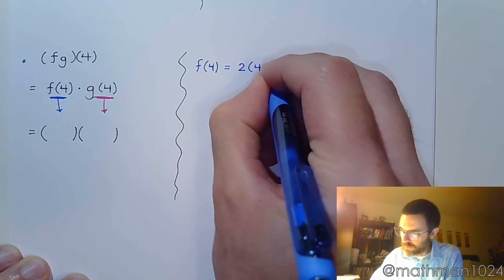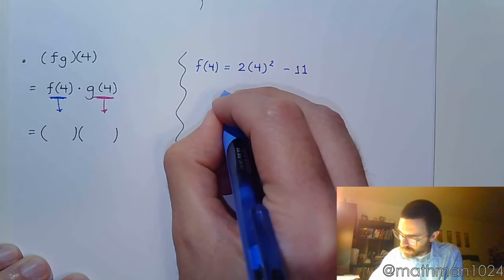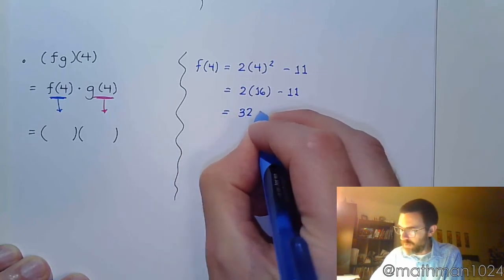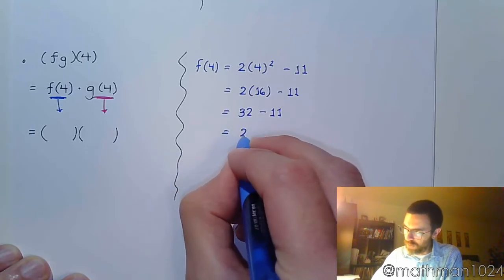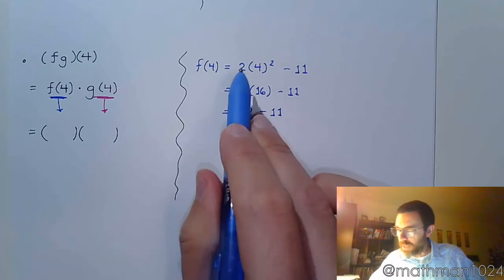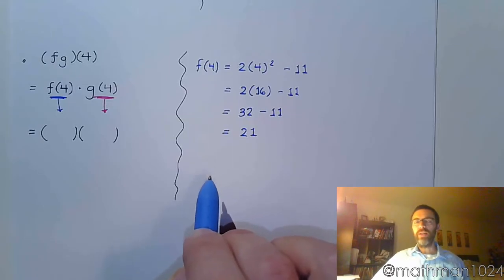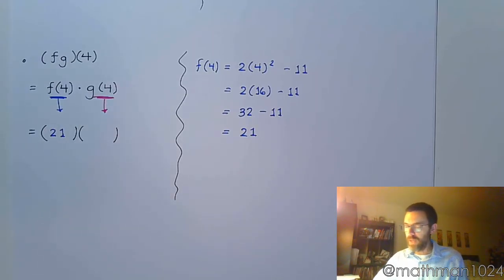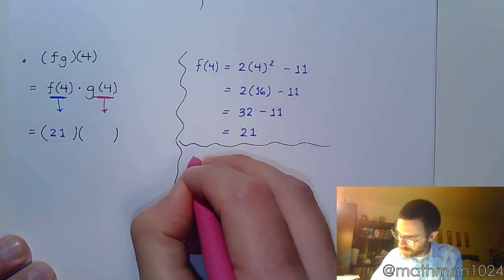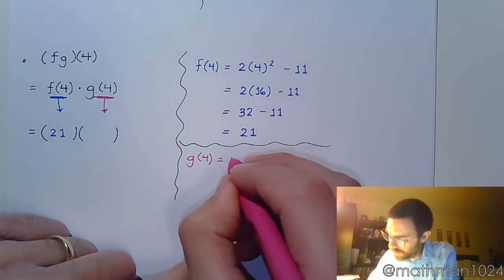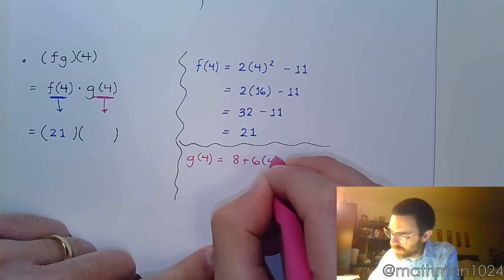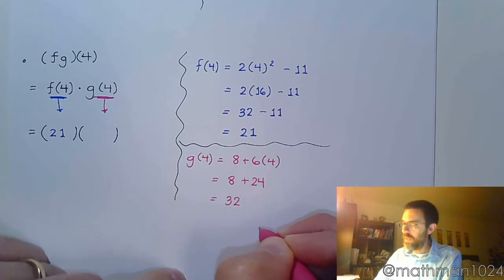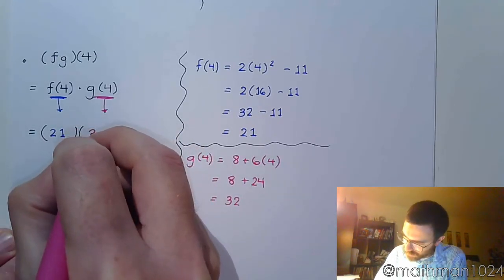So do them individually and come back and multiply. So f of 4, so that's 2 times 4 squared minus 11. All right. So 4 squared is 16. 2 times 16. That's the next piece. 32 minus 11. And we end up with 21. All right. Plug it in. Work out your order of operations. It shouldn't take you too long. We've done this for years and years and years. All right. So f of 4 is now 21. Let's find g of 4. Looking at the top of the page, I see that this is going to be 8 plus 6 times 4. 8 plus 24 equals 32.